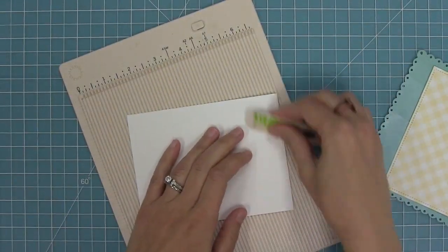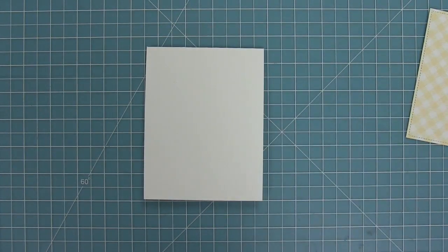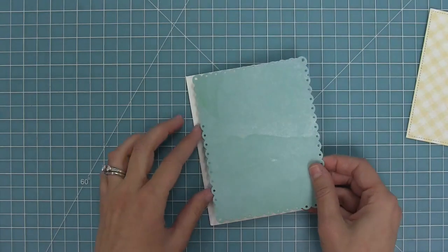Now here I'm creating a standard size card base at five and a half by four and a quarter and I'm going to layer these two die cuts on there and this is going to be the base of my card.